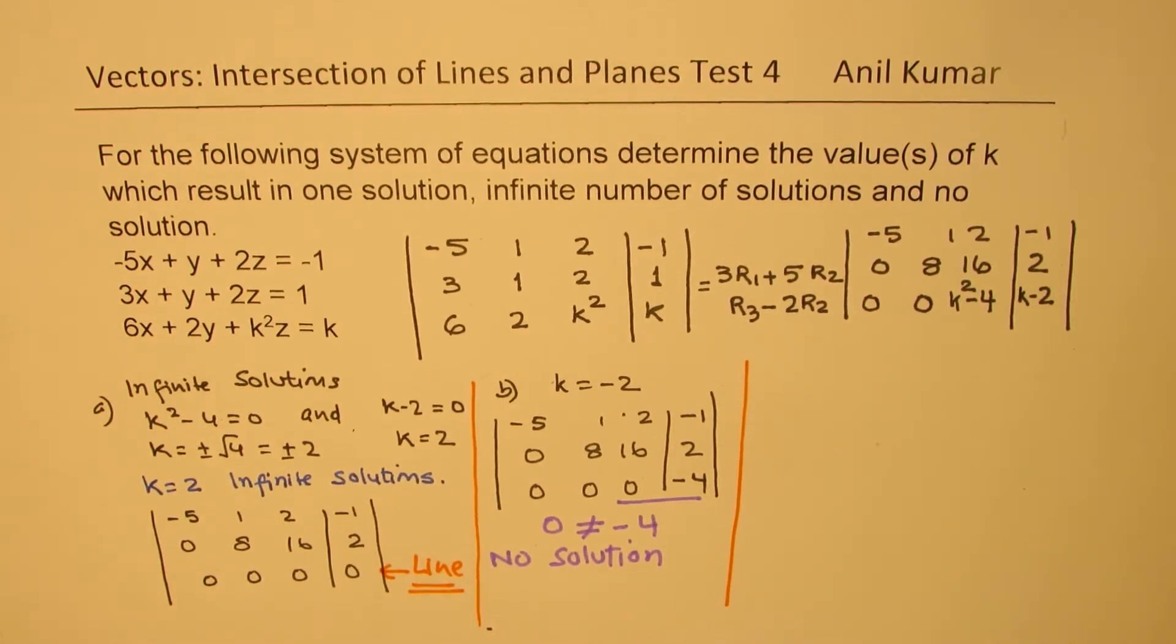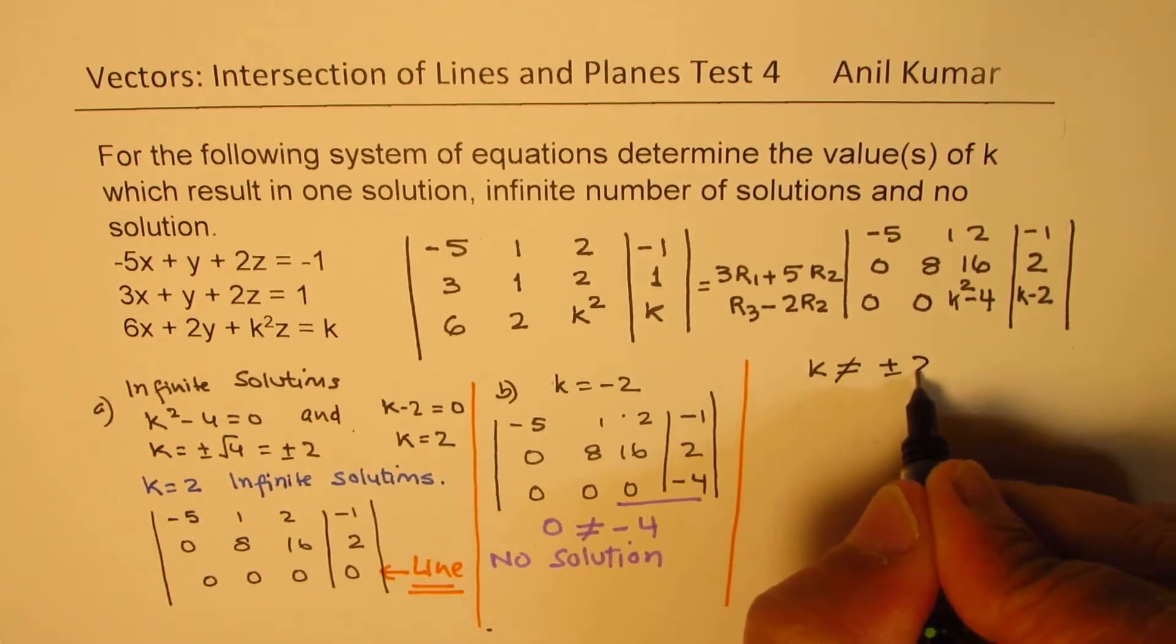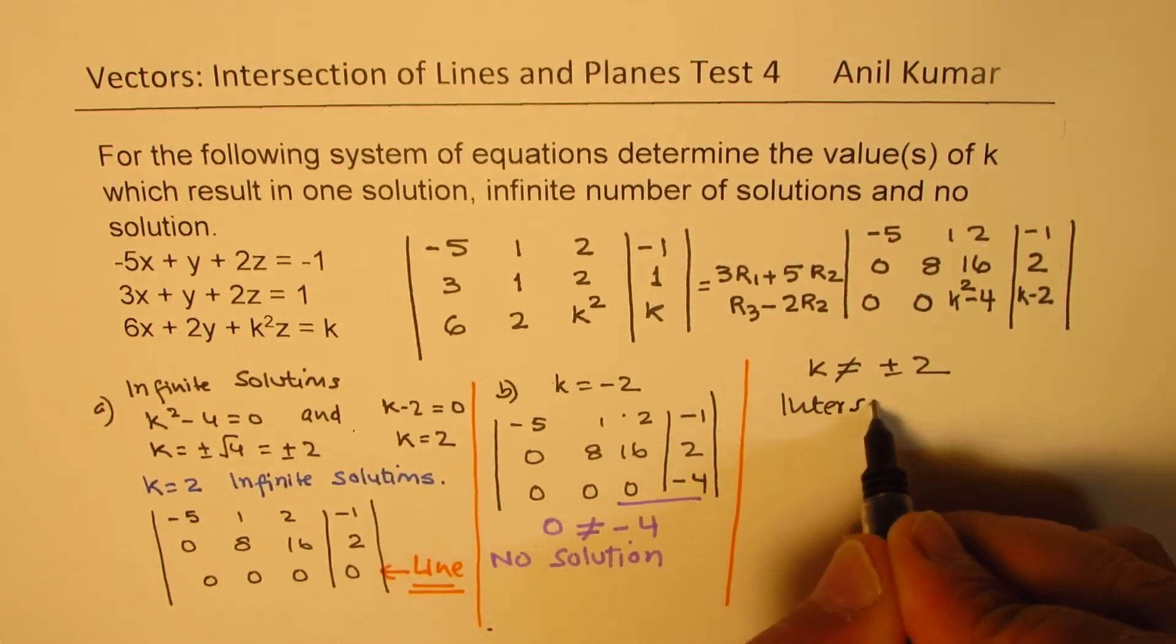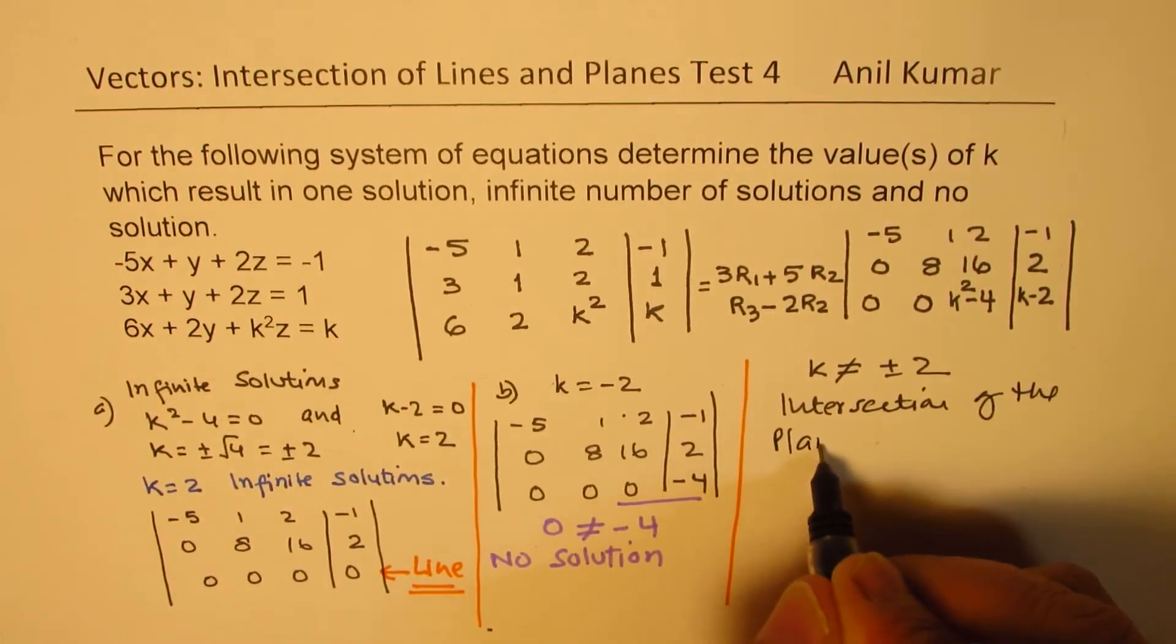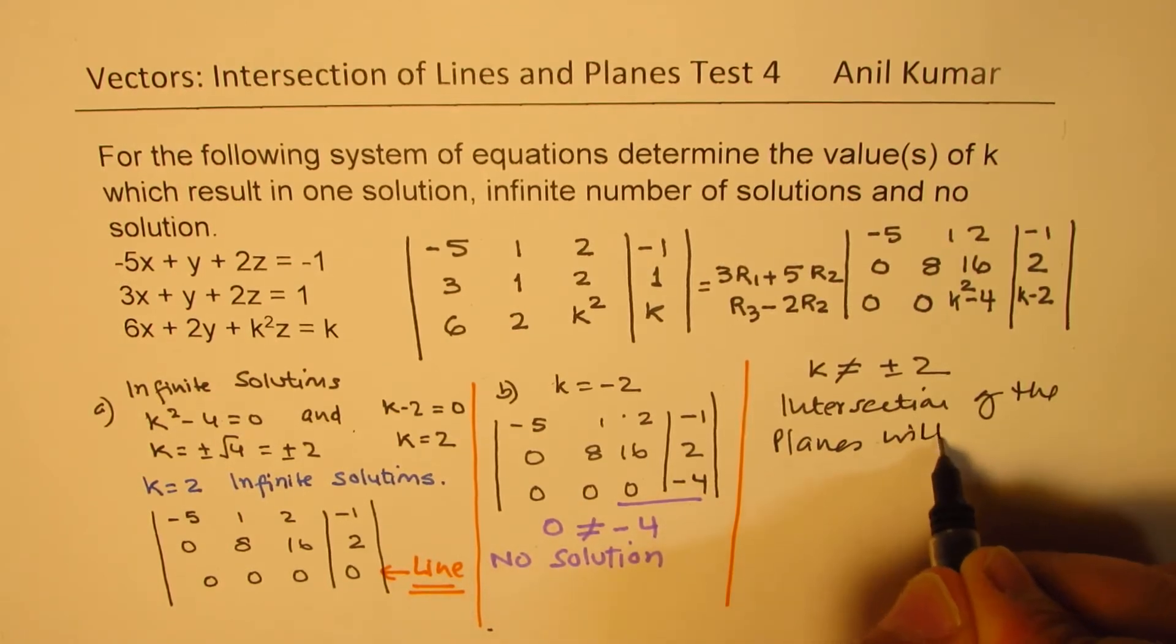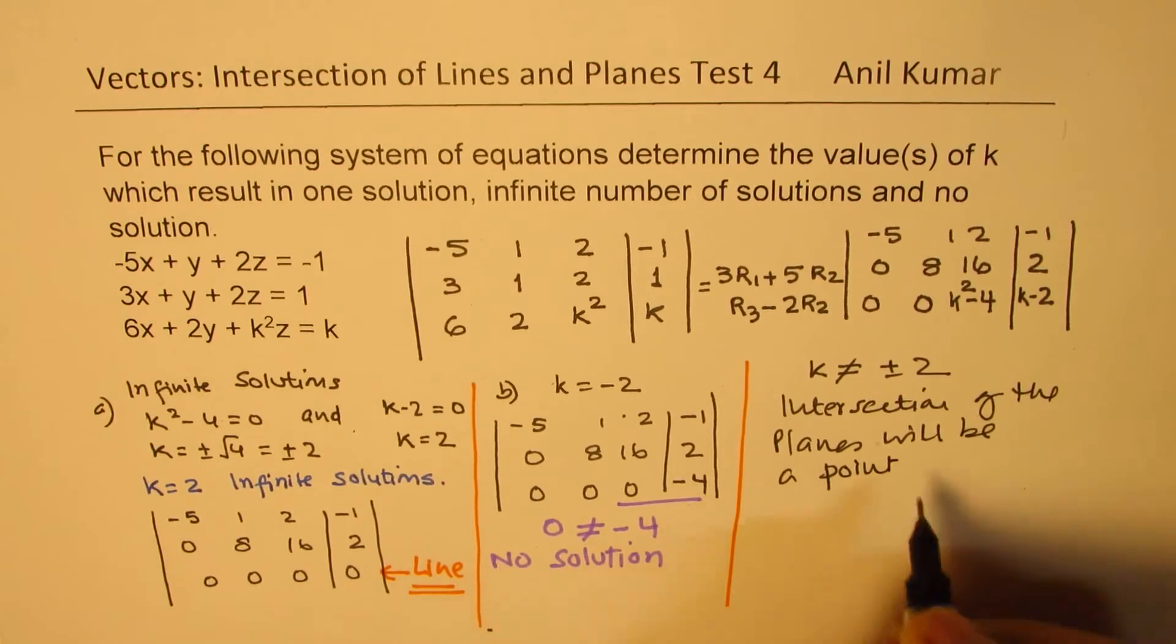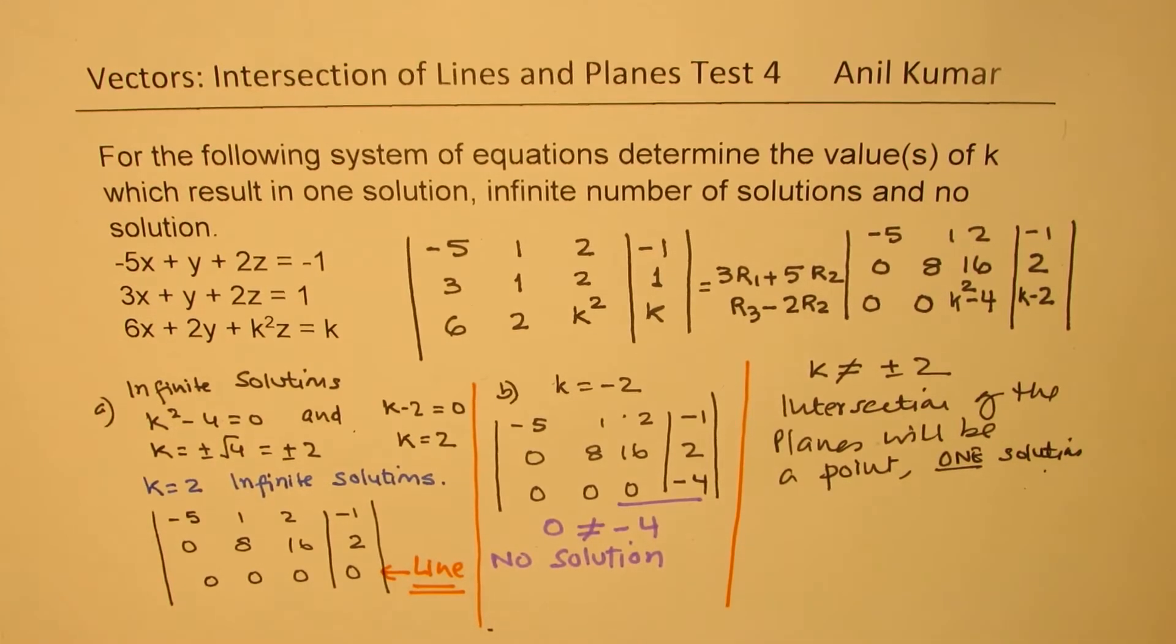Anything else, so if k is not equal to plus minus 2, then the intersection of the planes will be a point. So we have one solution. So that is one solution. So that is how we could actually solve this particular question.